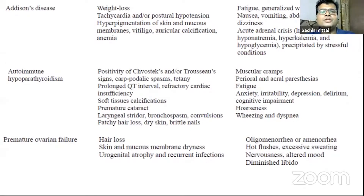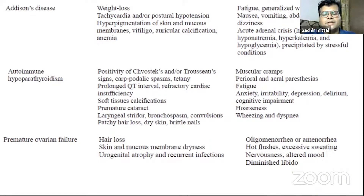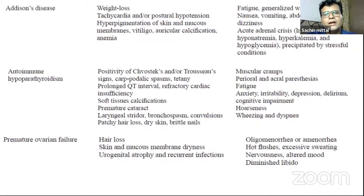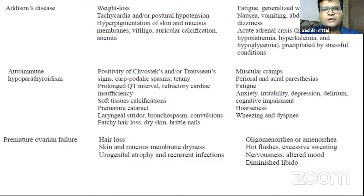Another very common autoimmune disorder is Addison's disease. In this part of the country, tuberculosis and fungal diseases still remain a common cause, but overall autoimmunity is perhaps the most common cause of Addison's disease. Non-traumatic hypoparathyroidism is also most commonly due to autoimmunity. Similarly, primary gonadal insufficiency — specifically primary premature ovarian failure — can have an autoimmune origin, and this is predominantly seen in the ovary, very rarely in the testes, likely because the blood-testes barrier is protective.